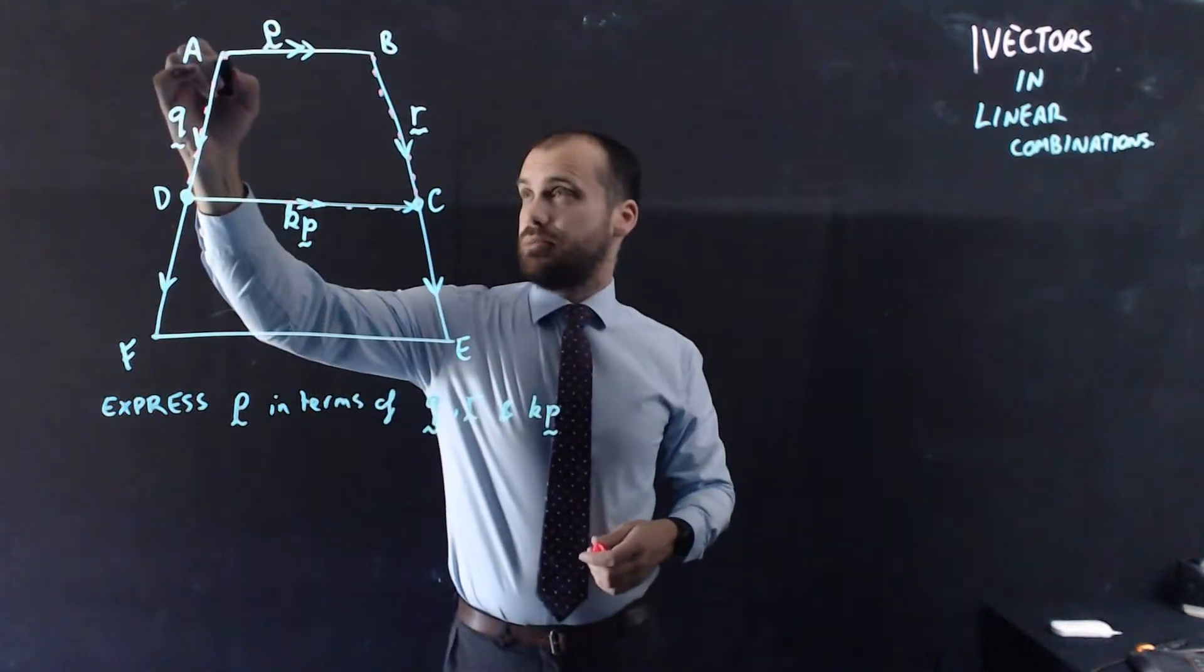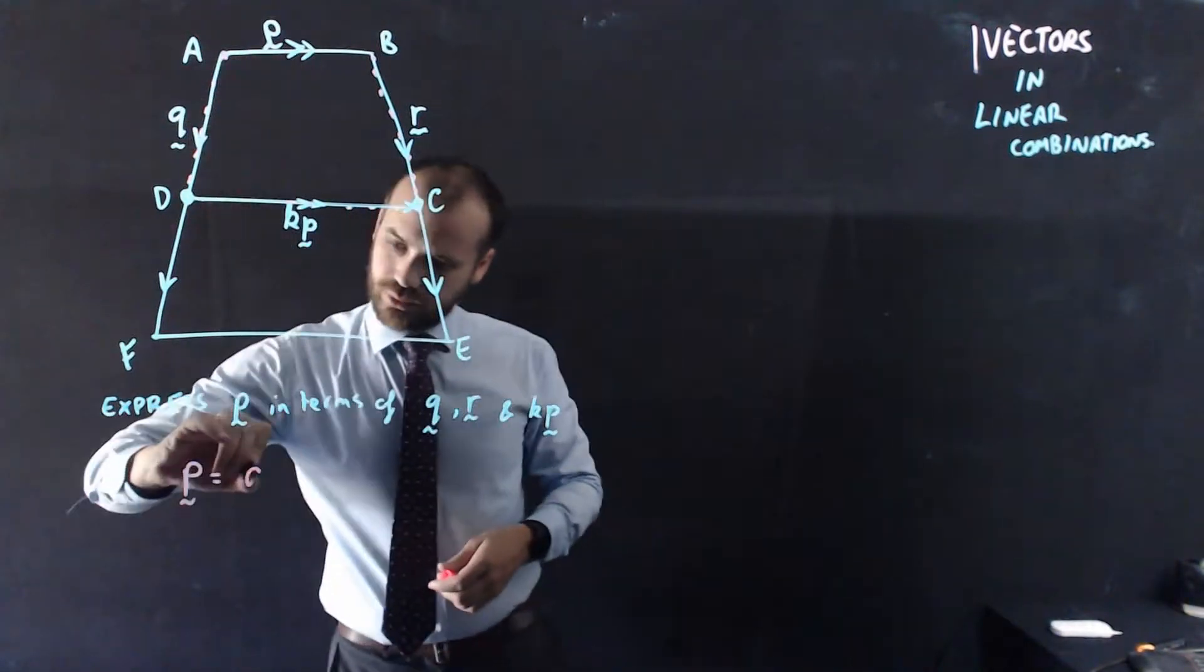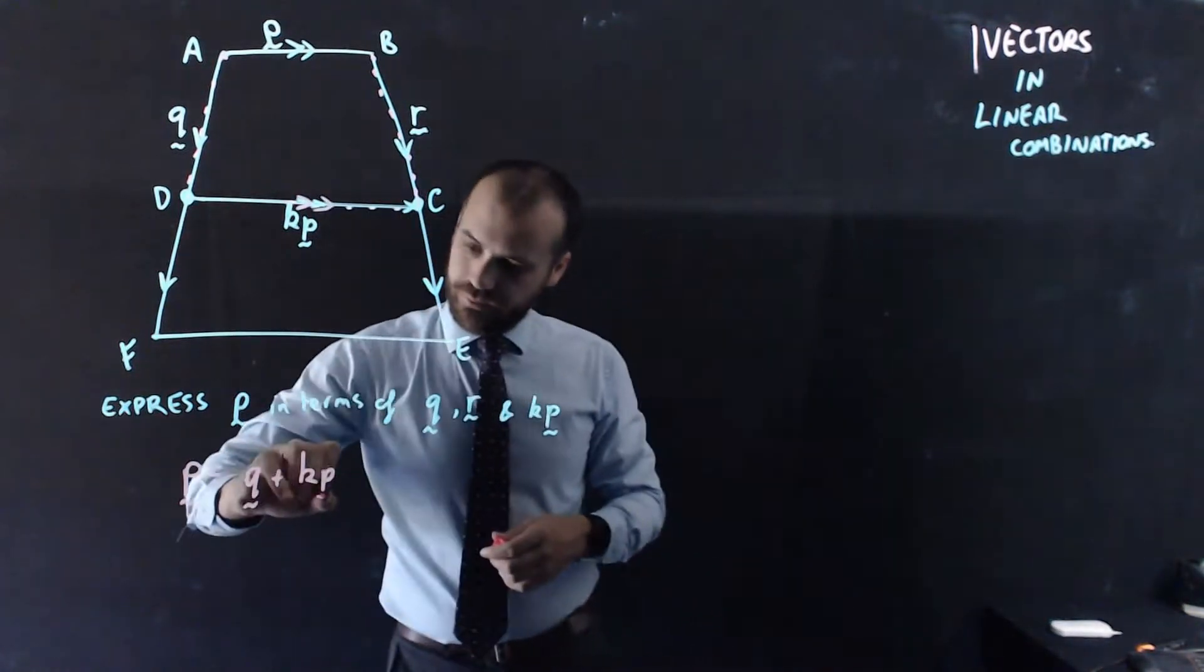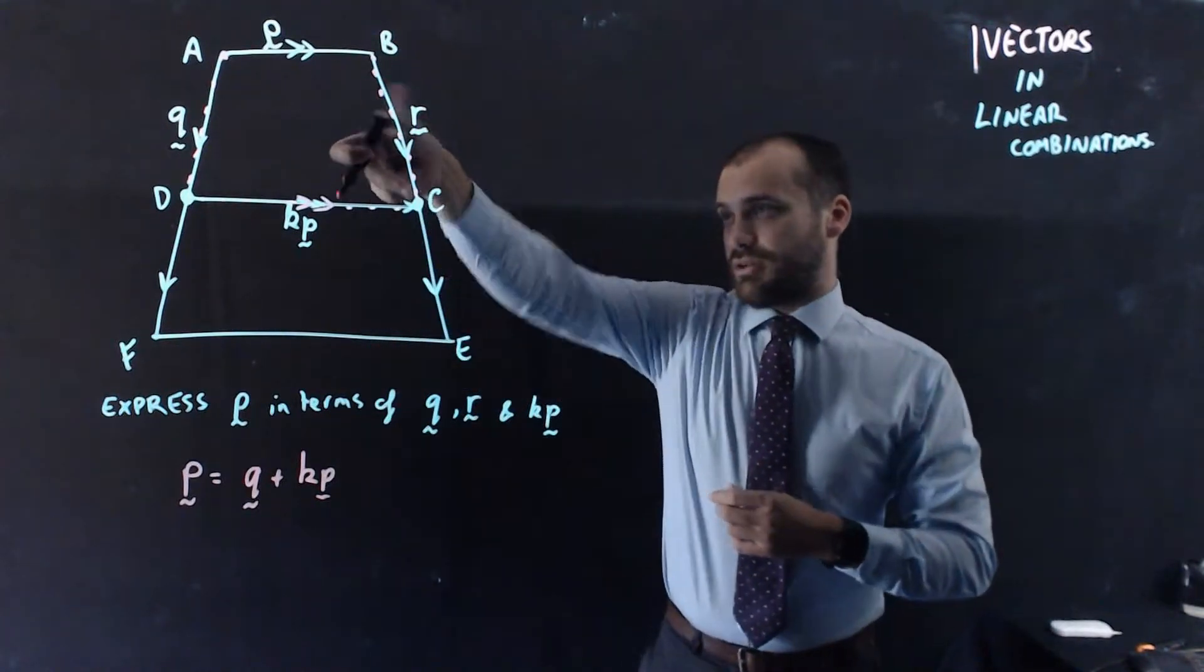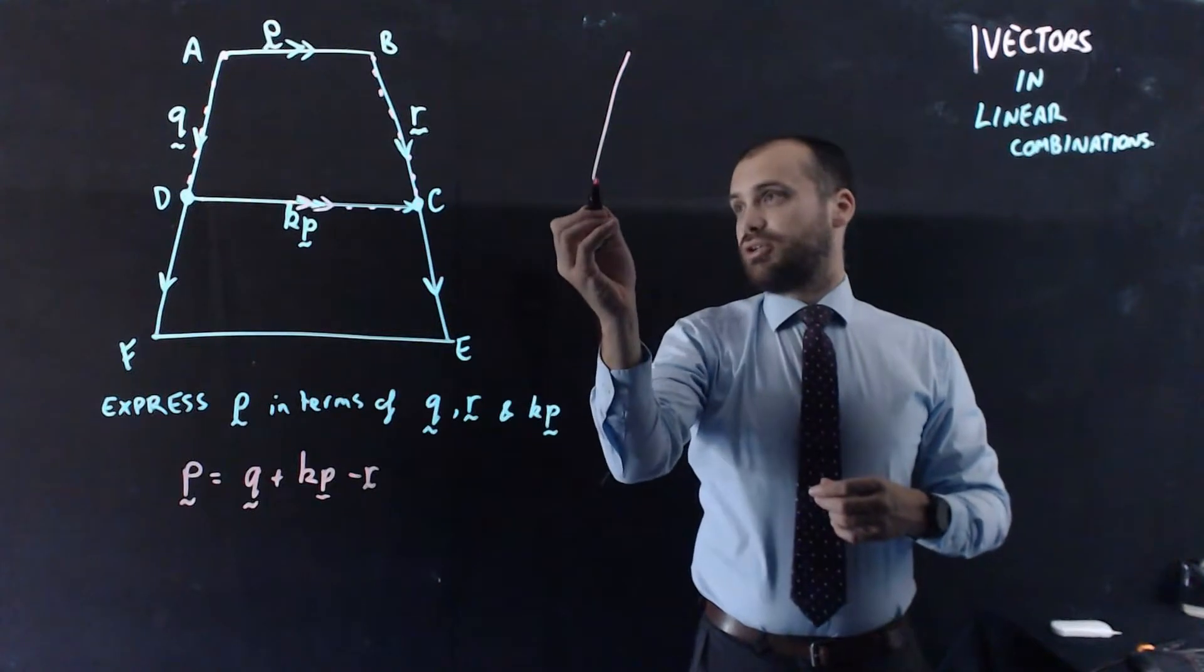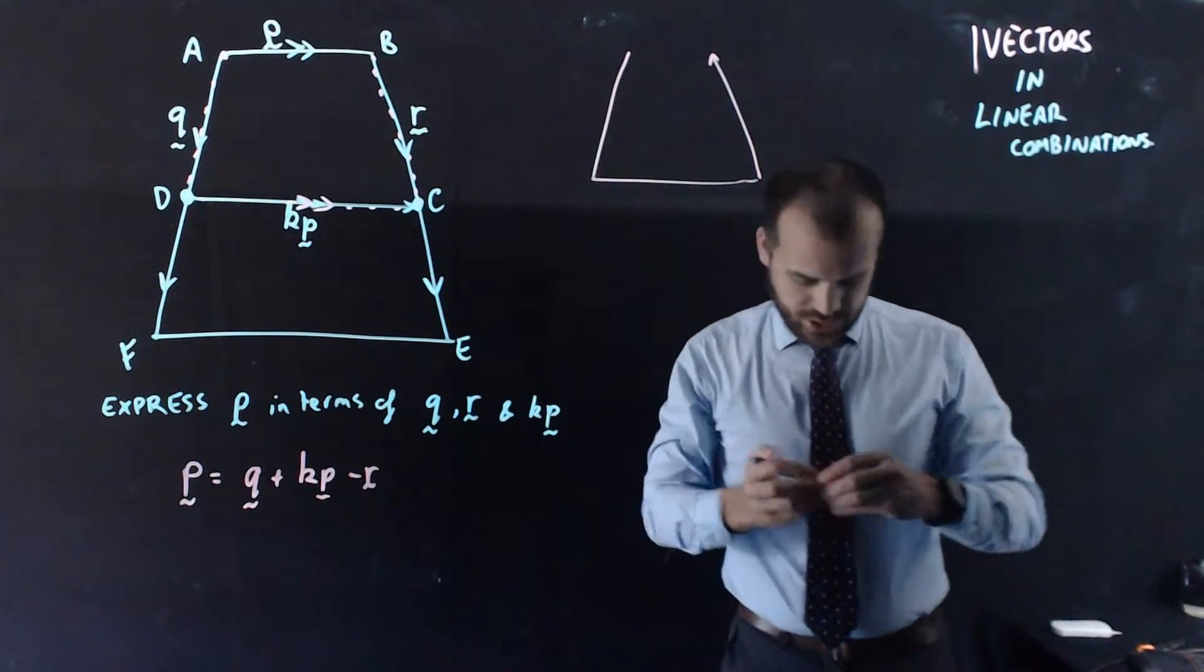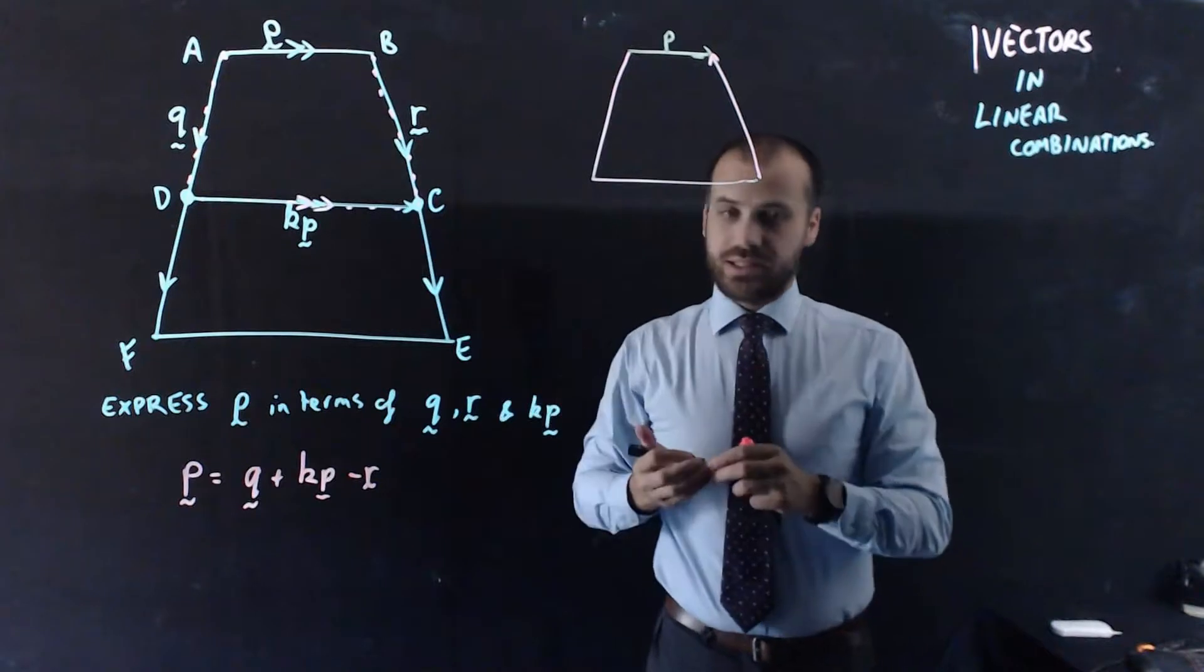So we start at the tip, so we can say that P is going to be equal to Q plus KP, because you can see KP is heading in that direction. And then R is heading down, right, so we need to flip R around to make it negative R. So now we have a picture like this: Q, KP, minus R, which is plus negative R. And we do the tip to tail and we get P. So we've added three vectors together to make that single vector.